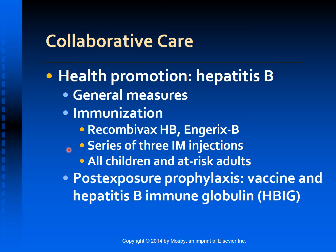For post-exposure prophylaxis, the HBV vaccine and hepatitis B immunoglobulin (HBIG) are used. HBIG contains antibodies to HBV and confers temporary passive immunity. HBIG is recommended for post-exposure prophylaxis in cases of needle stick, mucous membrane contact or sexual exposure, and for infants born to mothers who are HBsAg positive. Ideally, HBIG should be given within 24 hours of exposure and the vaccine series (0, 1, 6 schedule) should also be started.